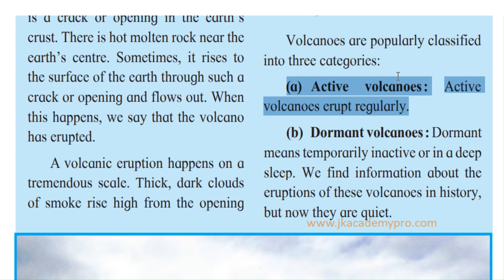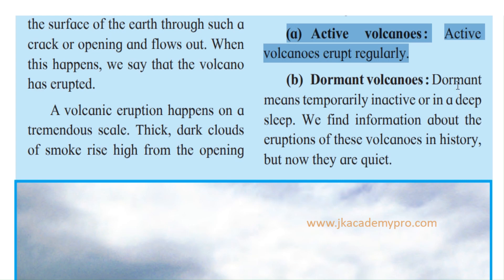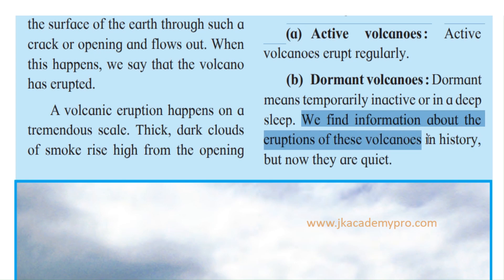Then we have the dormant volcano. 'Dormant' means temporarily inactive. It has erupted once and now it has gone off to sleep — that is, it is inactive and doesn't erupt anymore. We find information about the eruption of these volcanoes in history, but now they are quiet, meaning no other eruptions take place. These are called dormant volcanoes.